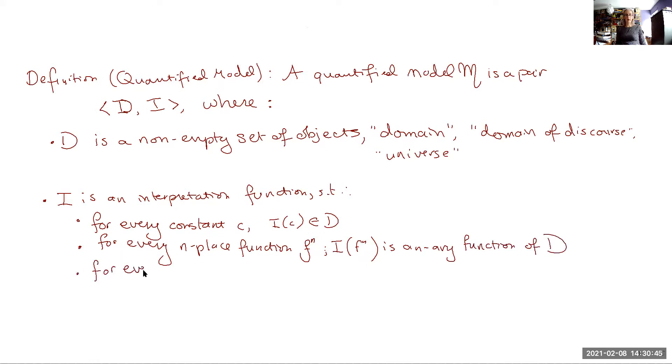And for every n place predicate symbol, so this covers both the unary predicates and the relations of greater arity, the interpretation of that symbol is going to be a subset of the relevant combination of the relevant collection of objects from the domain. So this is how it's written in the set theoretic notation, but the way that you can read this is that the interpretation of some n-ary relation is a set of n-tuples of the domain.